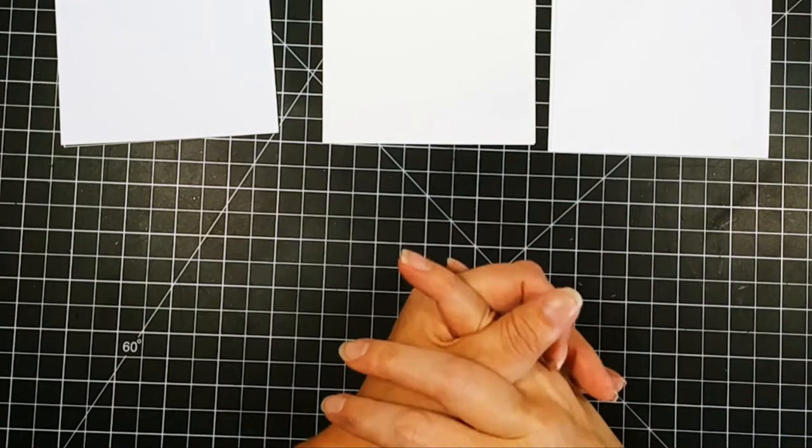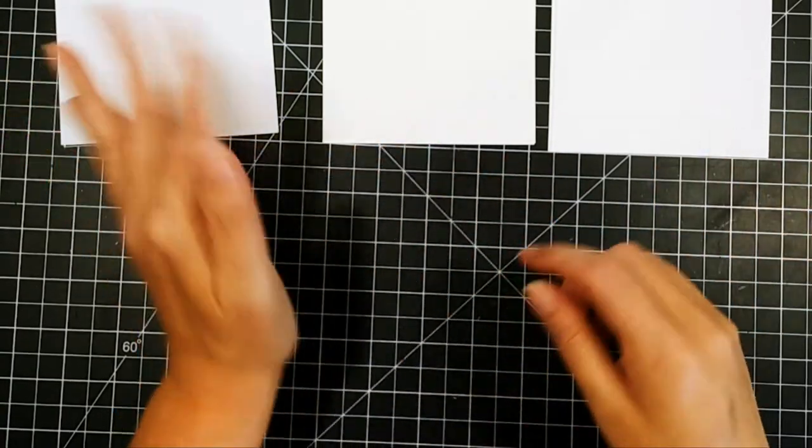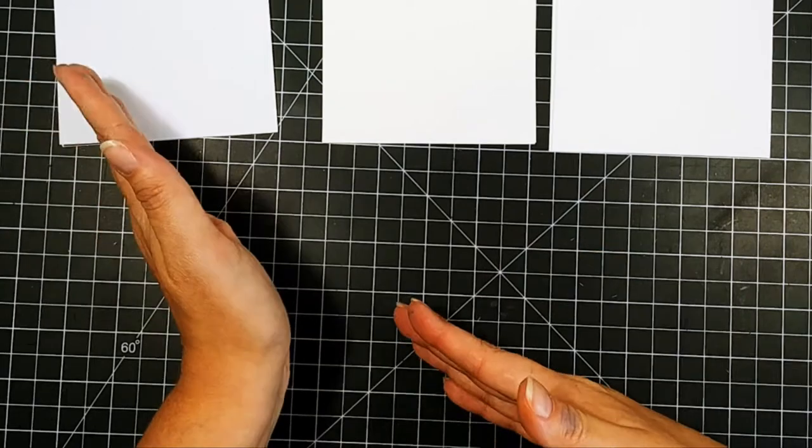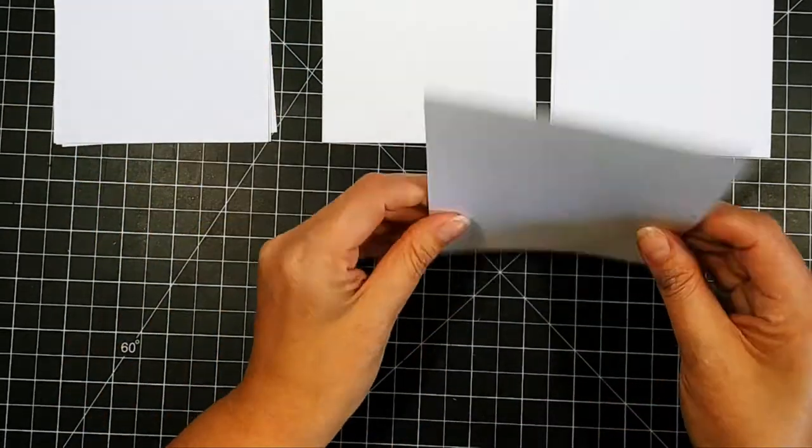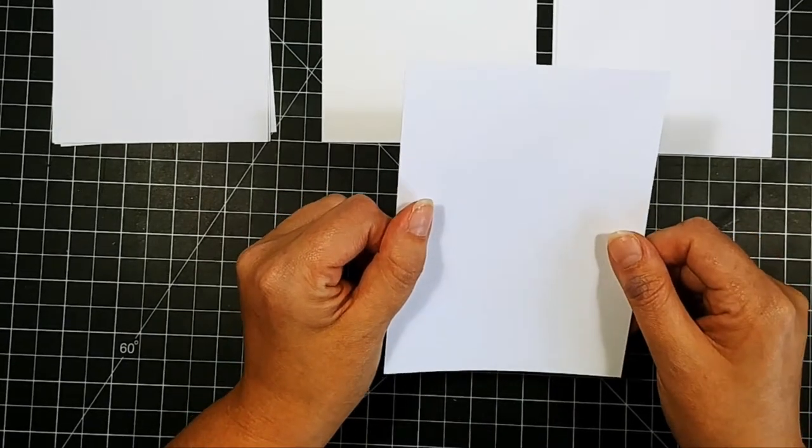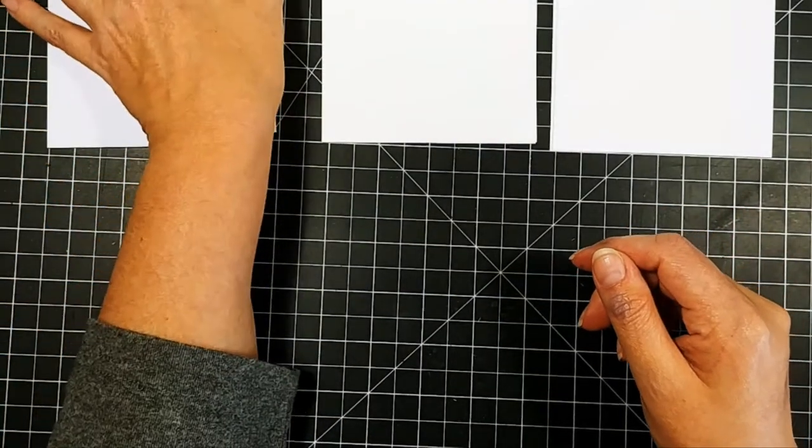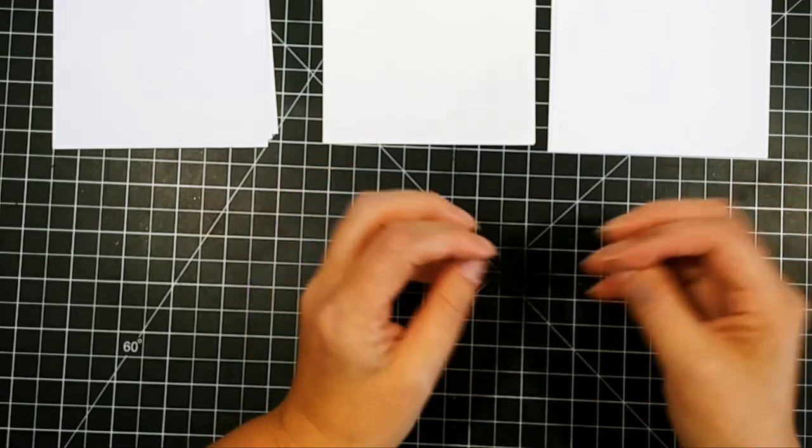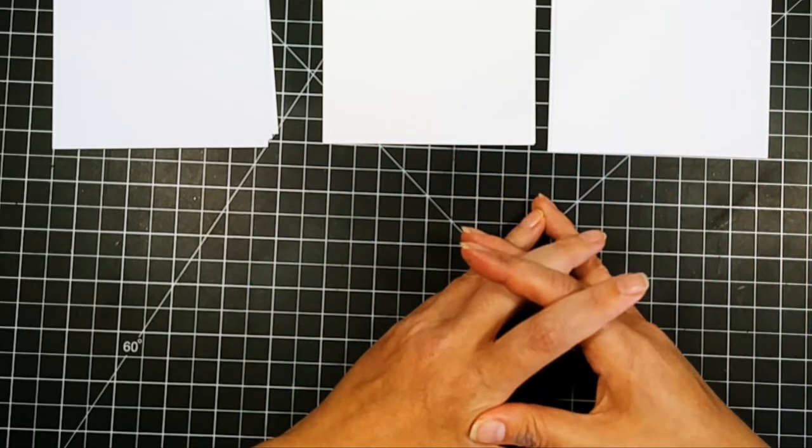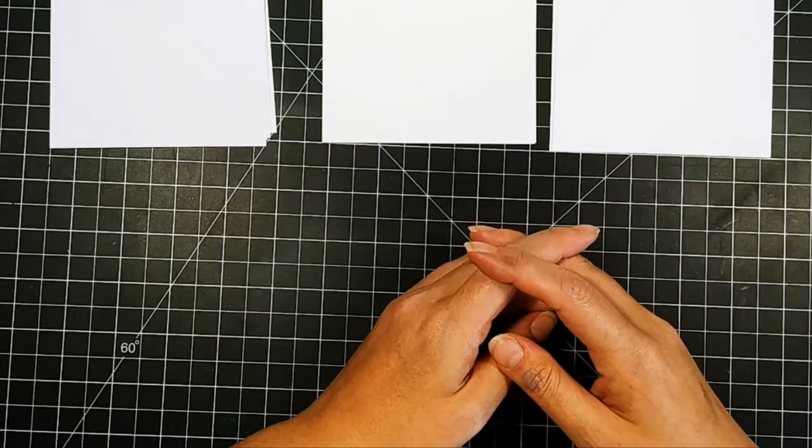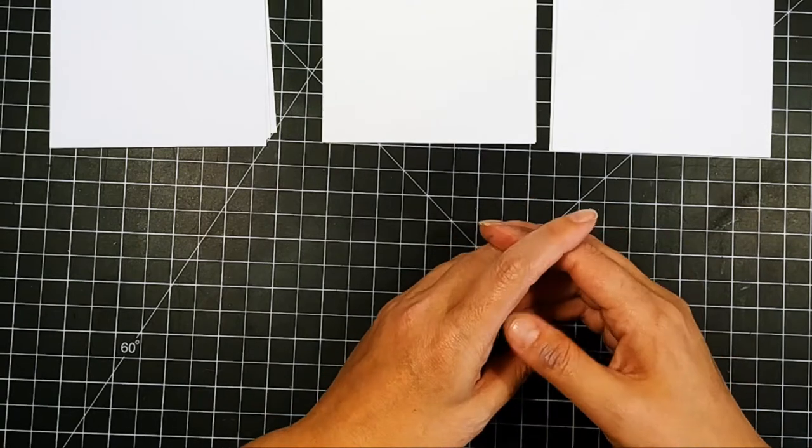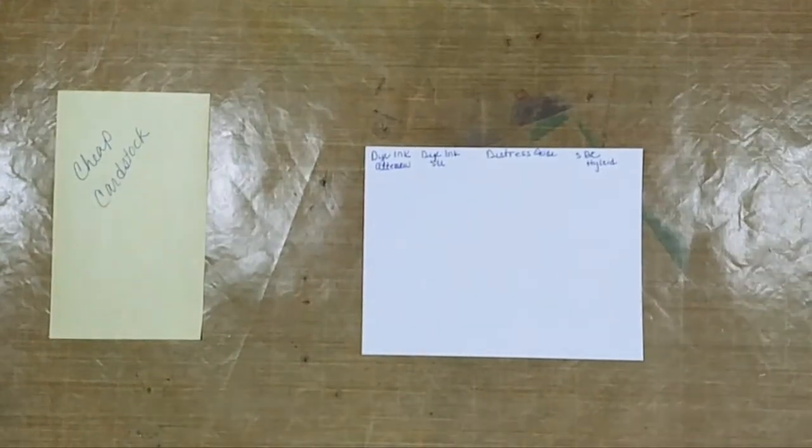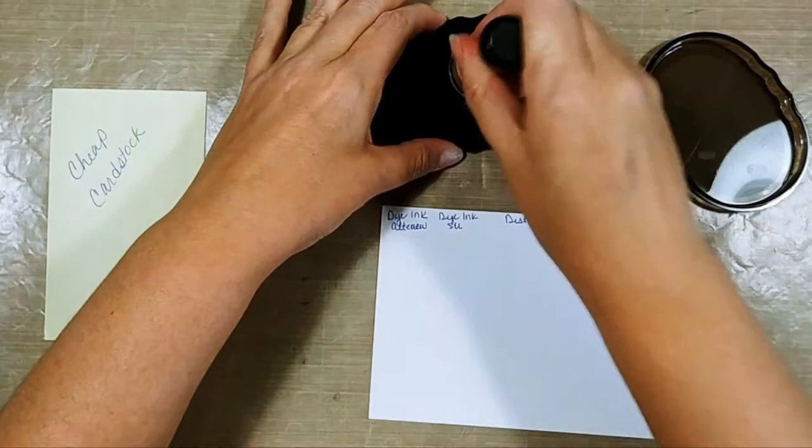What we're going to do real quick is I'm going to test all of these different inks in stripes down all these different papers, and I'll label it on screen so you can see which one it is. We're going to start with the cheap cardstock first, and I want to show you the difference. A couple different things to note about ink blending: all inks are going to dry differently. Some are going to tone down, some are going to even out, some are going to stay exactly like they are. It depends on the ink and the paper you use. So keep that in mind as you're ink blending.